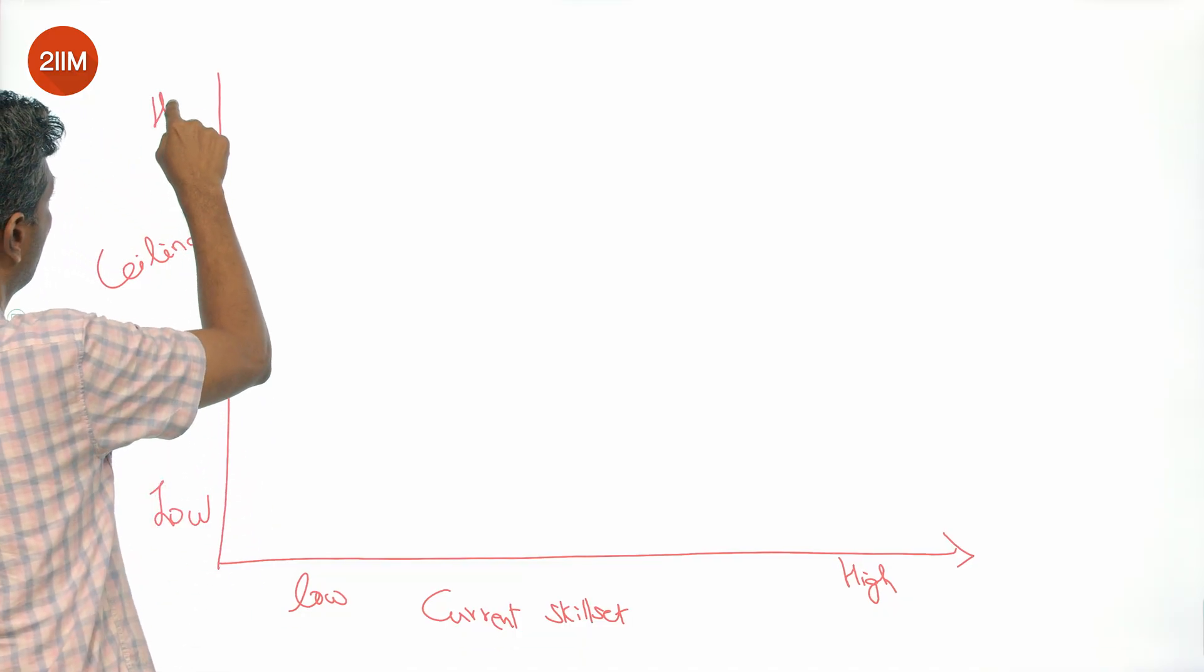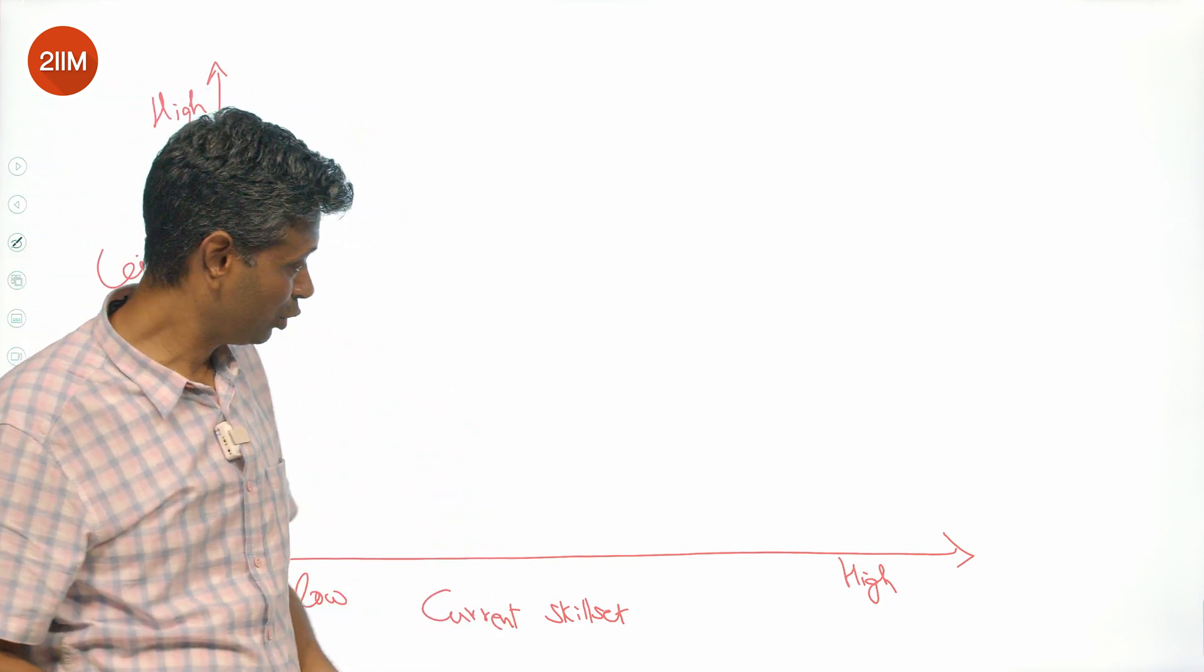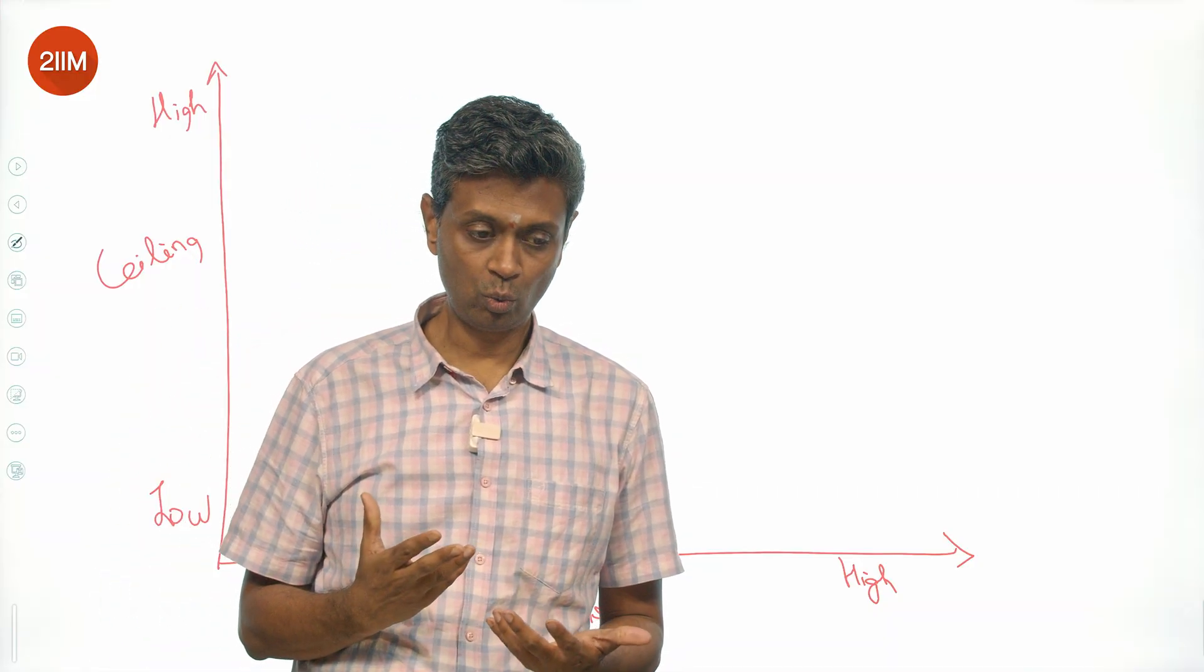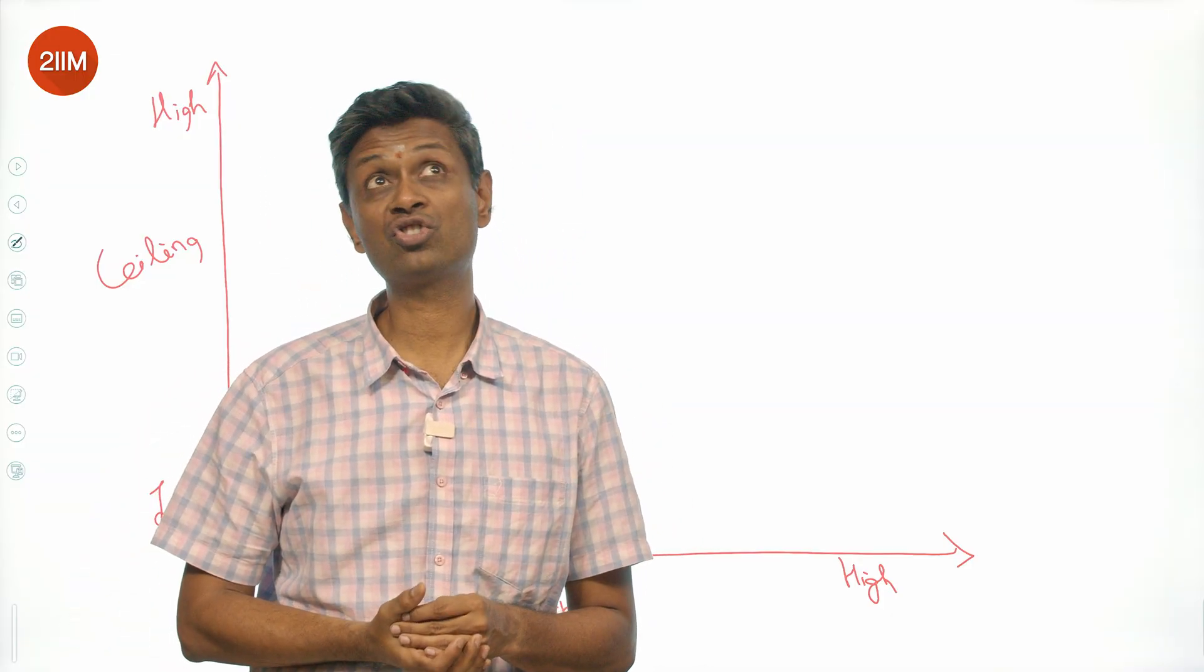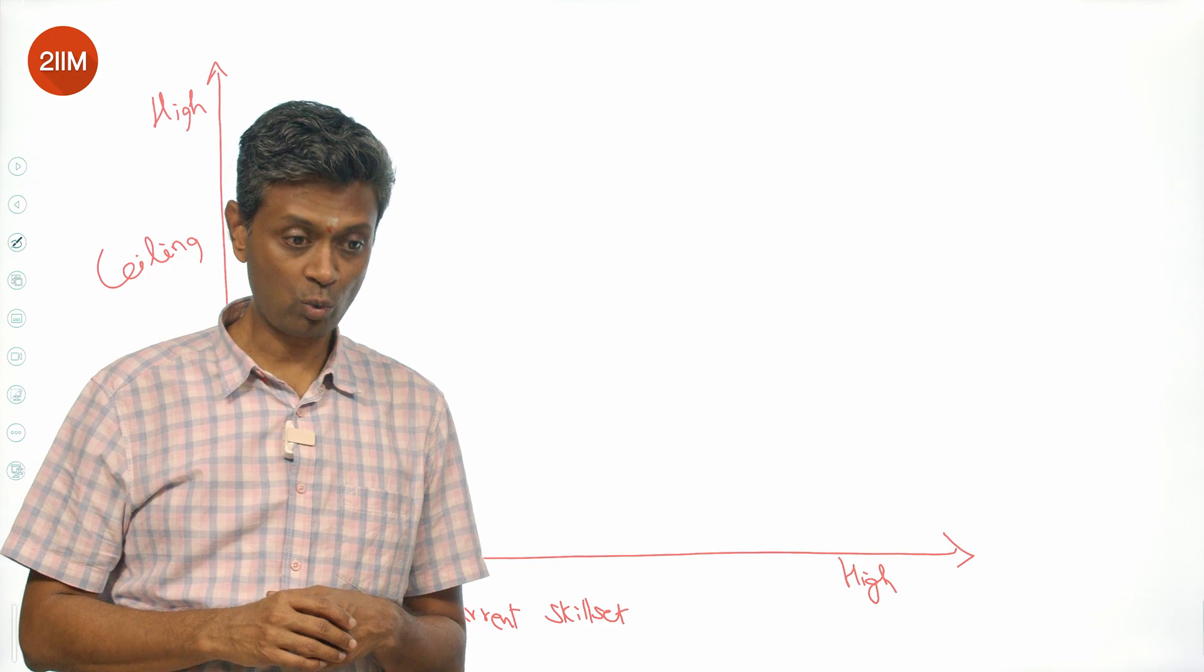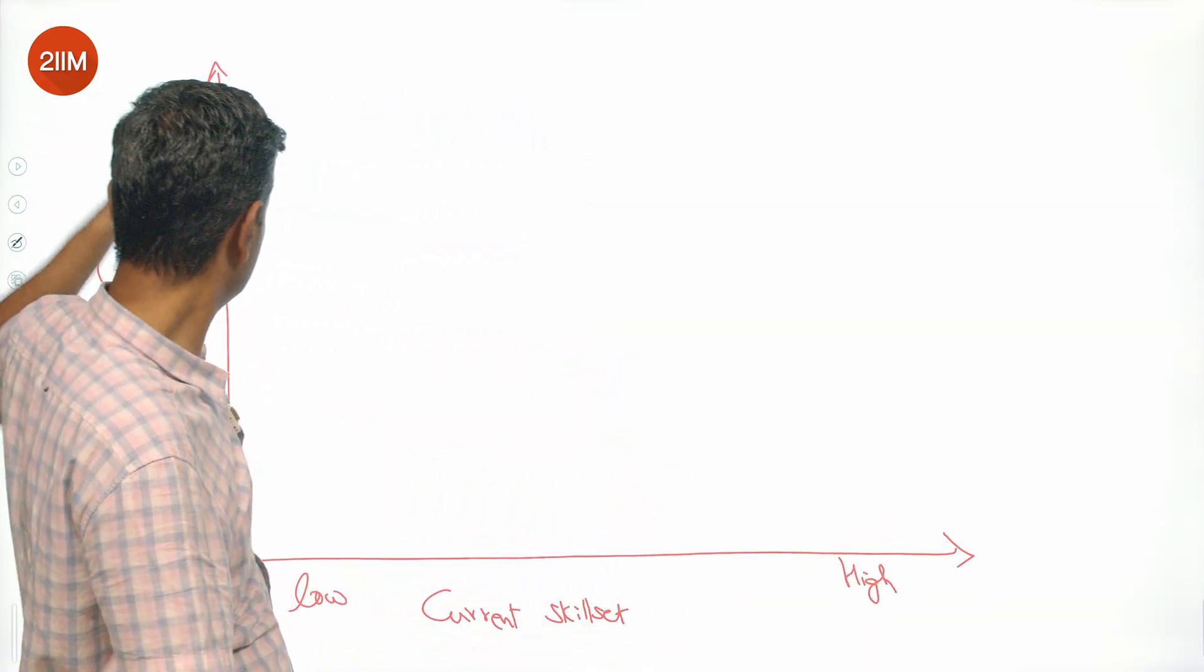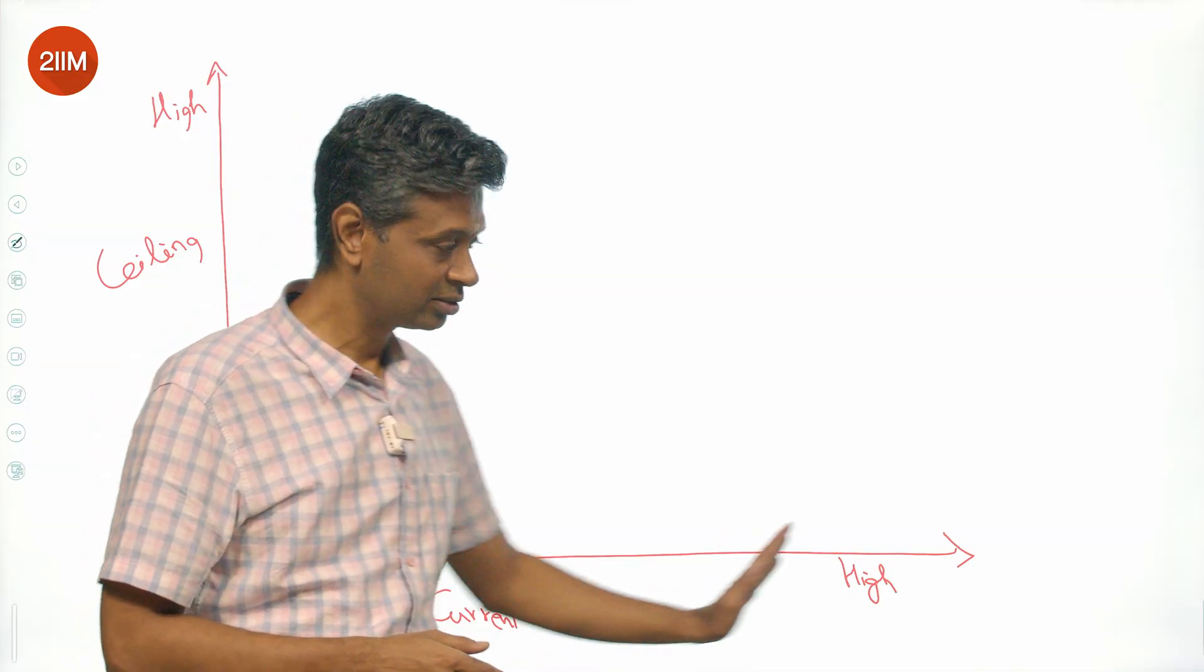Very important to think about: all of us want to be here where current skill set is high. There are some activities that amp up your performance in what you already do, and there are some activities that make you uncomfortable with what you do but your ceiling keeps going higher. Very important to choose activities that take you here and here in both axes.